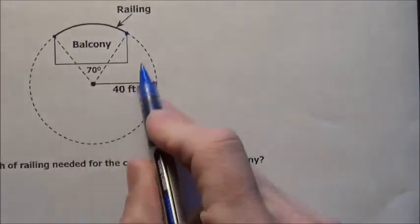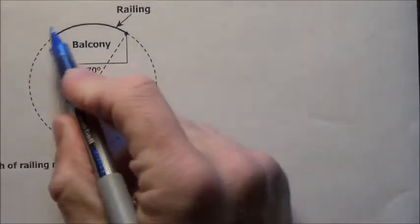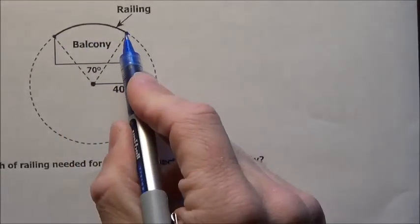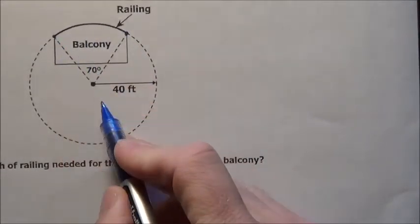you have to figure out what fractional part. We know the whole distance around would be the circumference. So we just want a fractional part of the circumference. How many degrees out of the 360 are they doing?